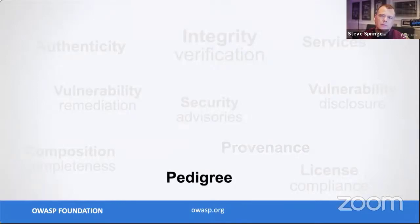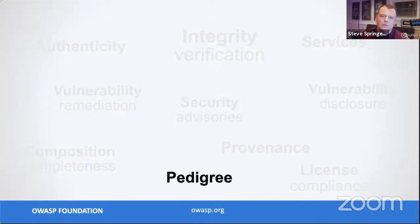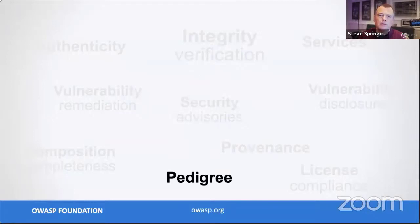Pedigree refers to the DNA - what is my makeup, what is my component's lineage. Open source software is the ultimate supply chain: components can and will be forked, modified, renamed, and redistributed infinitely. Being able to identify what your component is and all the modifications you've made to it, so you can represent your modified version to the world, is a really important use case - especially when those modifications involve backporting security fixes, fixing defects, or adding features. Your modifications are part of that component's pedigree, and you can describe those with SBOMs today.